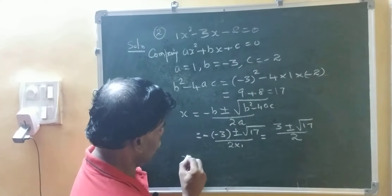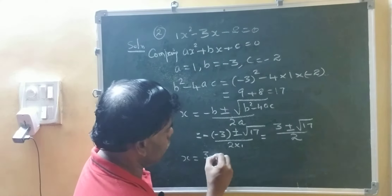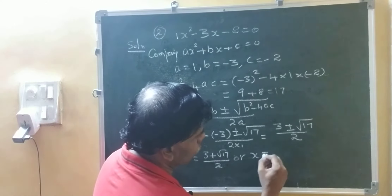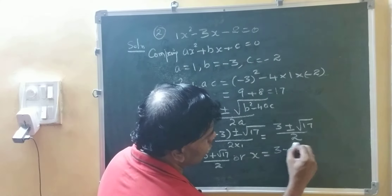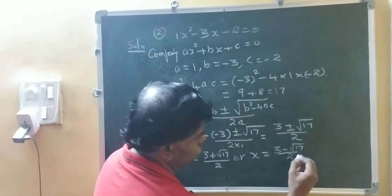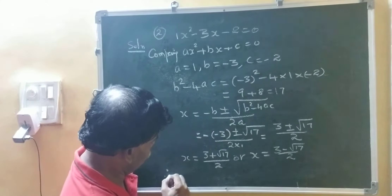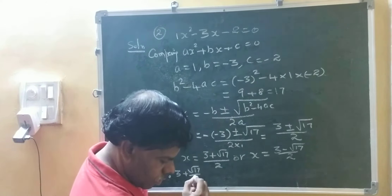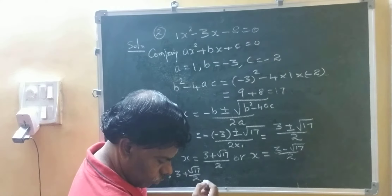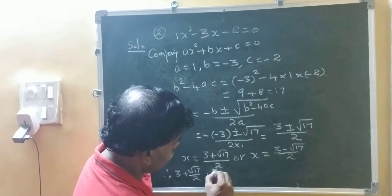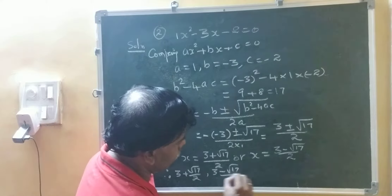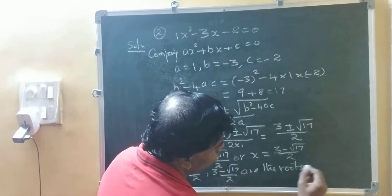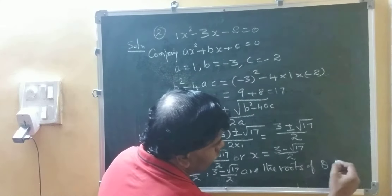So x equals 3 plus root 17 upon 2, or x equals 3 minus root 17 upon 2. Therefore, 3 plus root 17 upon 2 and 3 minus root 17 upon 2 are the roots of the quadratic equation.